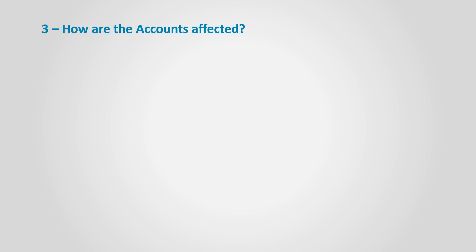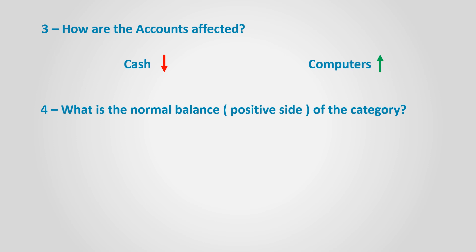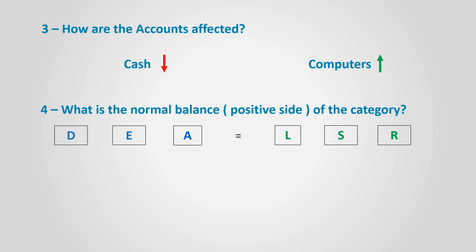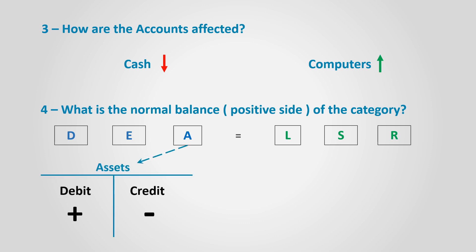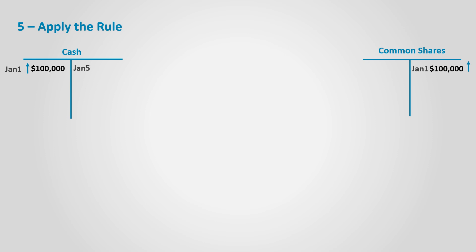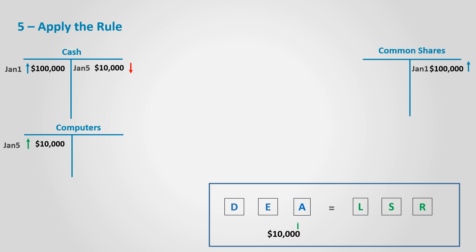How are the accounts affected? Cash decreased since the business paid cash to buy the computers, and computers increased since the business now owns computers. What is the normal balance? The assets category has a normal debit balance. Let's apply the rule: cash falls in the asset category whose normal balance is debit and it decreased, so $100,000 is recorded in the opposite side of its normal balance, which is the credit side. Computers falls also in the assets category whose normal balance is debit and it increased, so $100,000 is recorded in the debit side. Notice the overall effect: assets increased by $100,000 in the form of computers and decreased by $100,000 in the form of cash, a net change of zero. The right-hand side of the equation is not affected, so both sides balance.